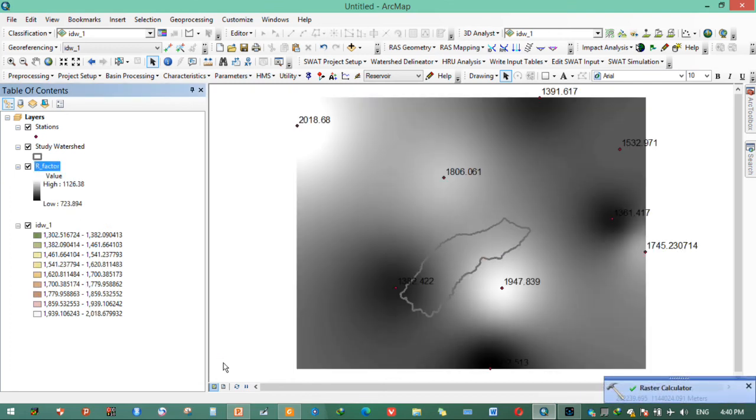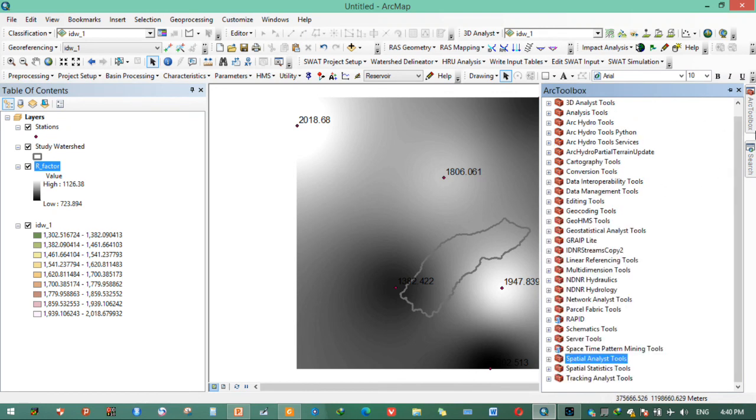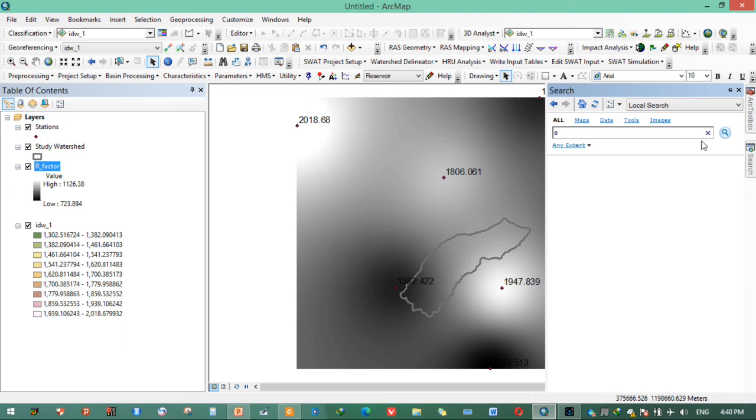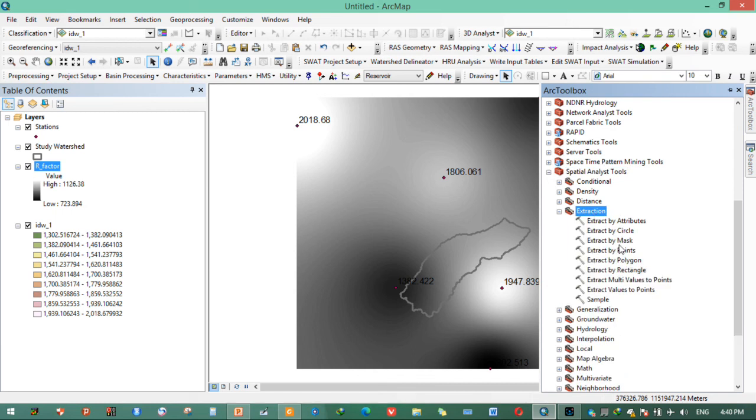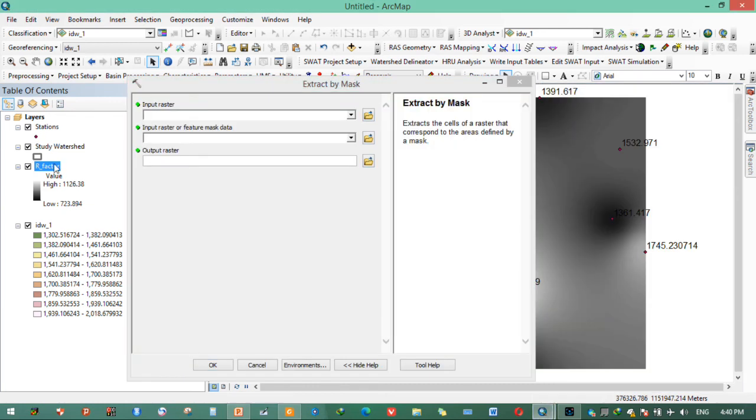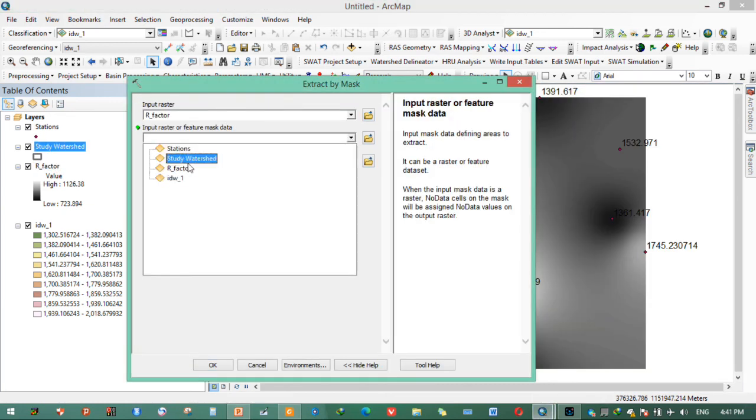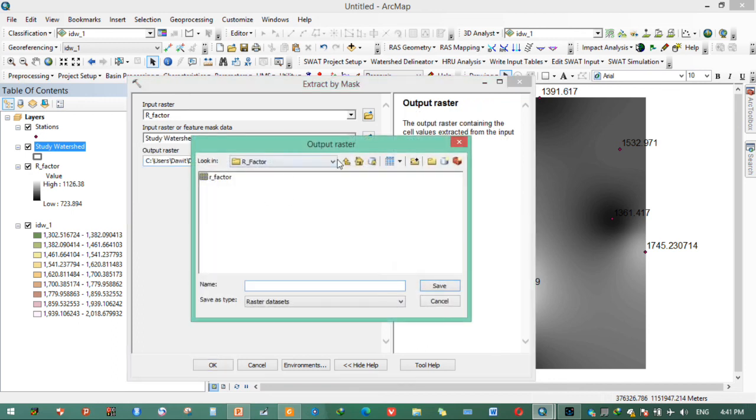This is our R factor. We can extract R factor based on our study area only. You can extract by mask. Here, extraction. Same toolbox, extract by mask. Double click this one. Input raster R factor for this study watershed. Here you can name as R factor.